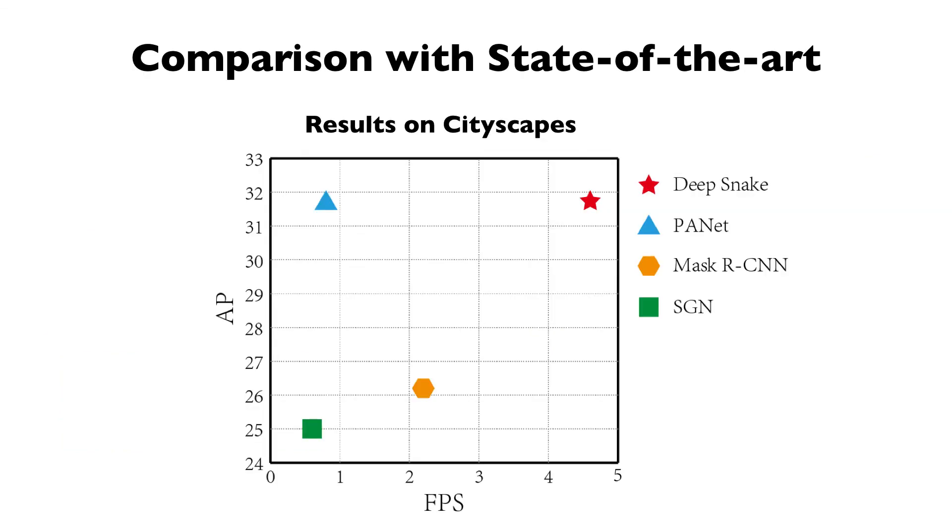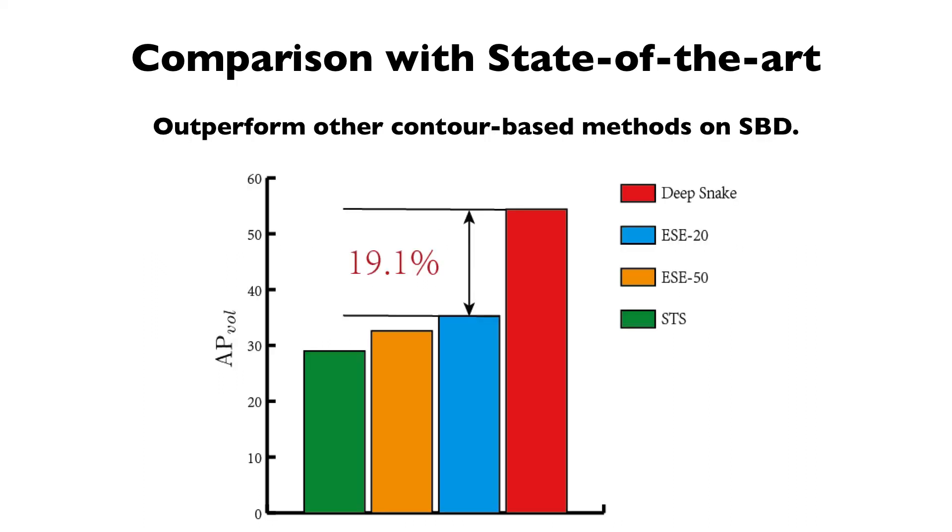We compare our method with state-of-the-art. On Cityscapes, DeepSnake performs competitively with PolarNet while being about five times faster. On SBD, we outperform other contour-based methods by a large margin.